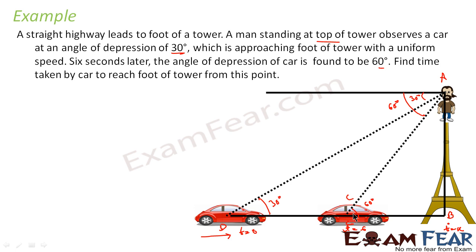We are told that from point D to point C it took 6 seconds. We have to find how much time it takes from C to B (the foot of the tower). To find that, we first need to find the distance BC and DC. Let's assume the height of the tower is x, and find CD and BC in terms of x.